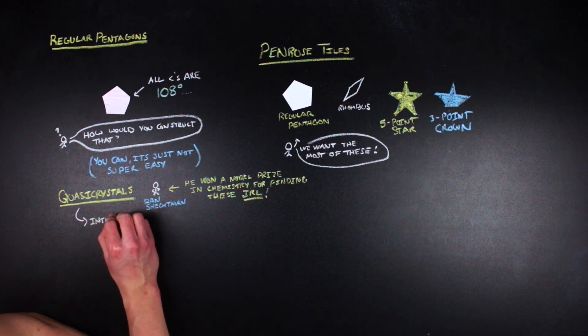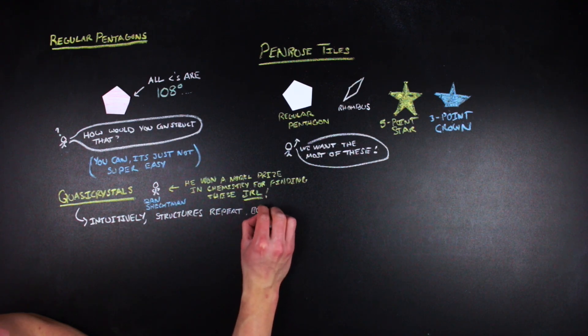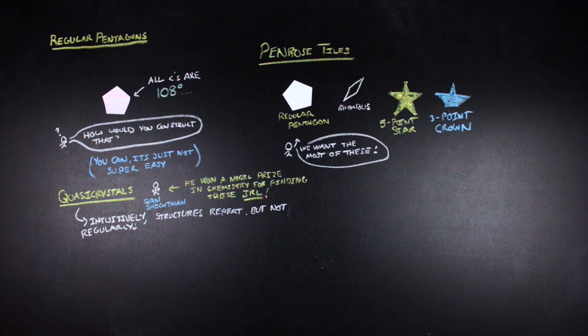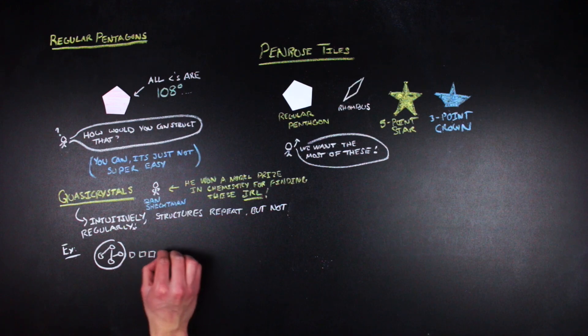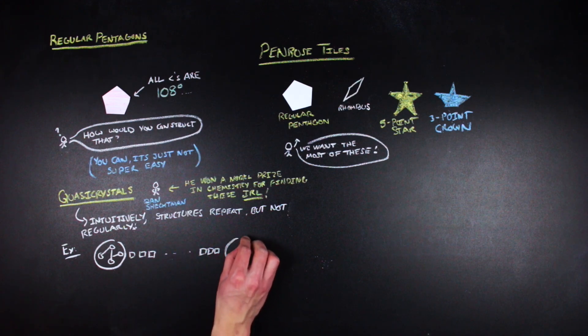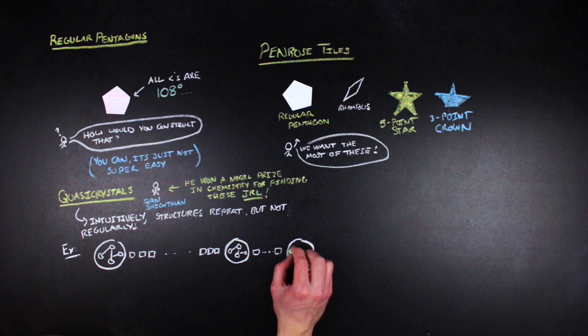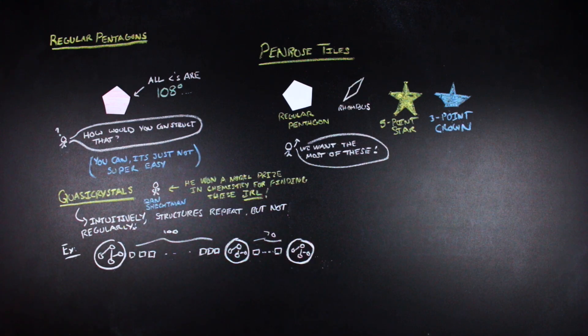So, a quasicrystal, to keep it physical, is a structure that has repeating structures within it, but the repetitions don't happen in a regular interval. So, what that means is that, say for example, you were to run into some carbon structure in this quasicrystal. What would happen then within the quasicrystal is that that structure of carbon that you found would repeat itself somewhere else in the structure, but it wouldn't happen regularly. So, you might have to go like 100 molecules out to hit the first repetition of it and then 70 out to hit the next repetition of it. And that's mostly a one-dimensional realization of it, but you can do the same thing in two dimensions.